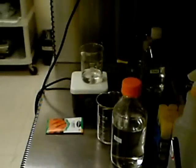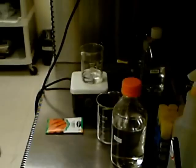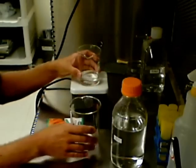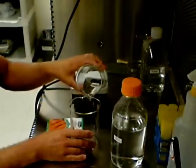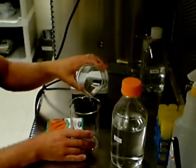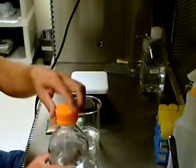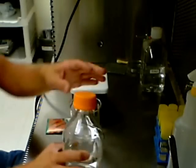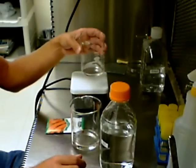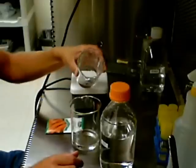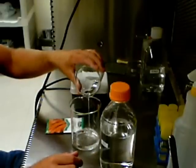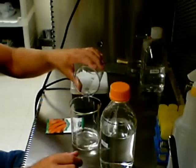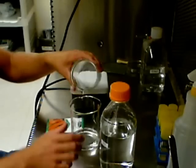After the seeds have been stirred, pour off the bleach solution being careful not to pour the seeds into the waste beaker. Remove the stirring bar from the beaker and rinse the seeds with about 150 or 200 milliliters of sterile distilled water. Hand stirring the seeds will work just fine for this application. Pour off the distilled water again and repeat this procedure three or four more times to make sure the bleach is washed completely off of the seeds.